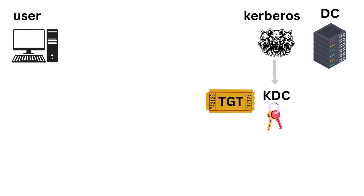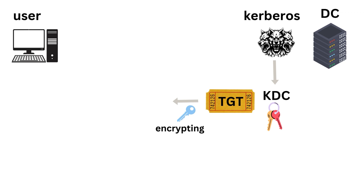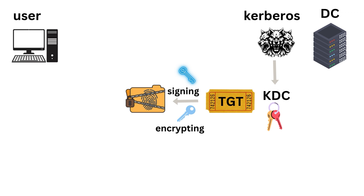Let's focus on what a TGT is. The TGT stores something called a session key — this is the most important information stored in a TGT, although there are other pieces of information as well. The KDC wants to send this session key to the user. The TGT is not sent in clear text; it is encrypted and also signed to ensure its confidentiality and integrity. You might ask where exactly these signing and encryption keys come from.